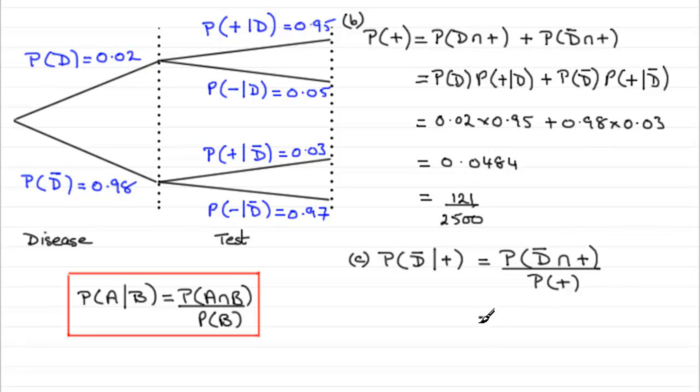Because we can see now that the probability of not having the disease and testing positive, this result here, was 0.98 times 0.03. Let's just write that in, 0.98 multiplied by 0.03. Then, we've got to divide it by the probability of testing positive. We'll just draw that line there. And we've got it here. Probability of testing positive. We kept the notation correct. So that turns out to be 0.0484.